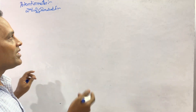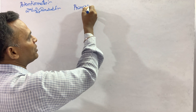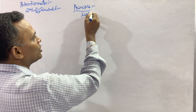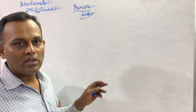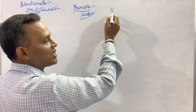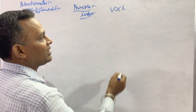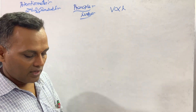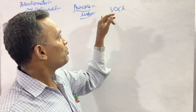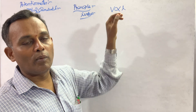Now we want to find the principle of the potentiometer. The principle of the potentiometer states that the potential across any two points of the potentiometer wire is directly proportional to the length of the wire between those two points.